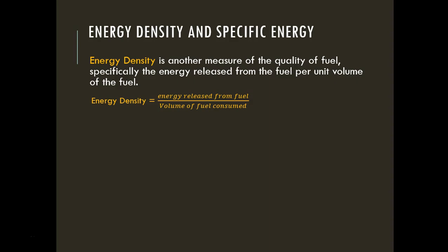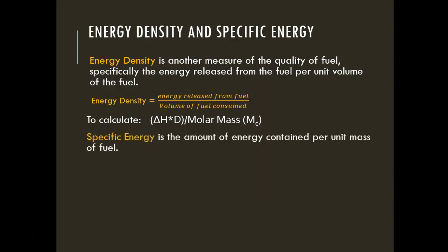Generally, energy density problems give you a density and a delta H value. Multiplying the delta H by the density and dividing by the molar mass gives a unit of energy per volume—usually kilojoules per liter. Specific energy is the energy per unit mass, calculated as energy released divided by mass. For a given fuel and delta H value, specific energy is simply the delta H divided by the molar mass.